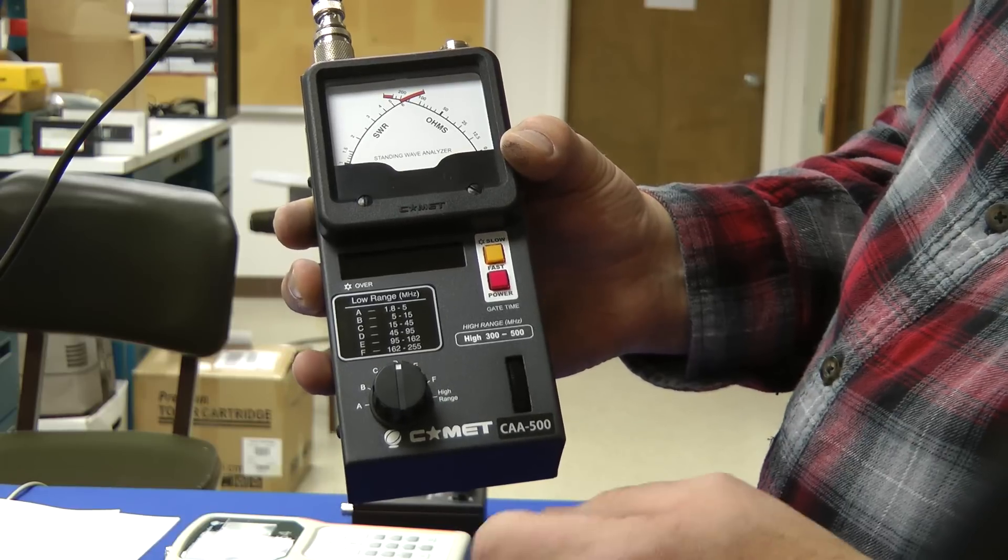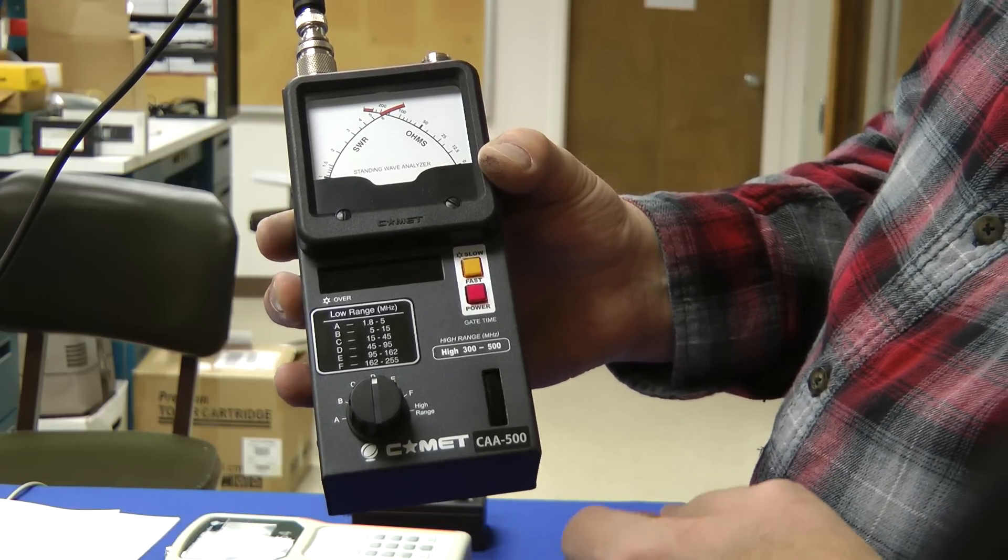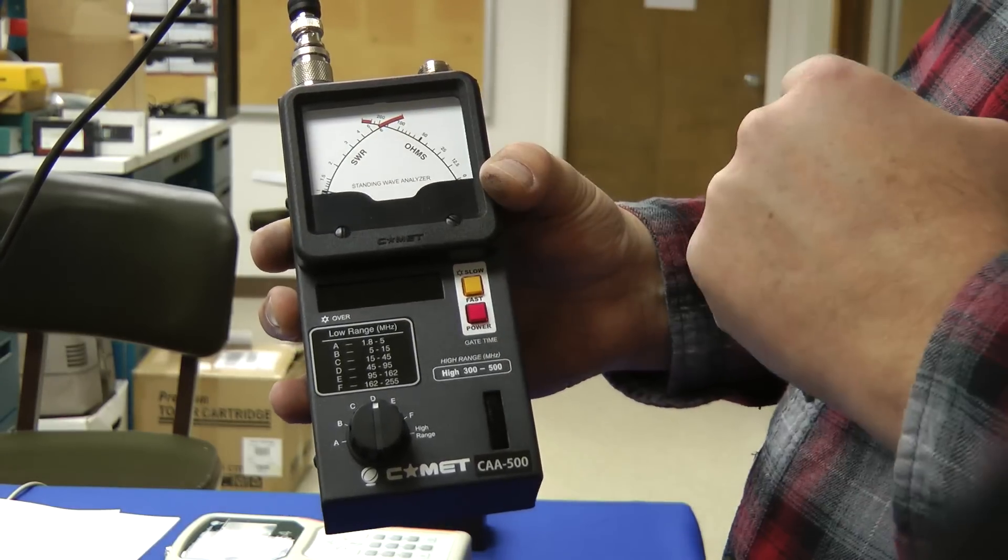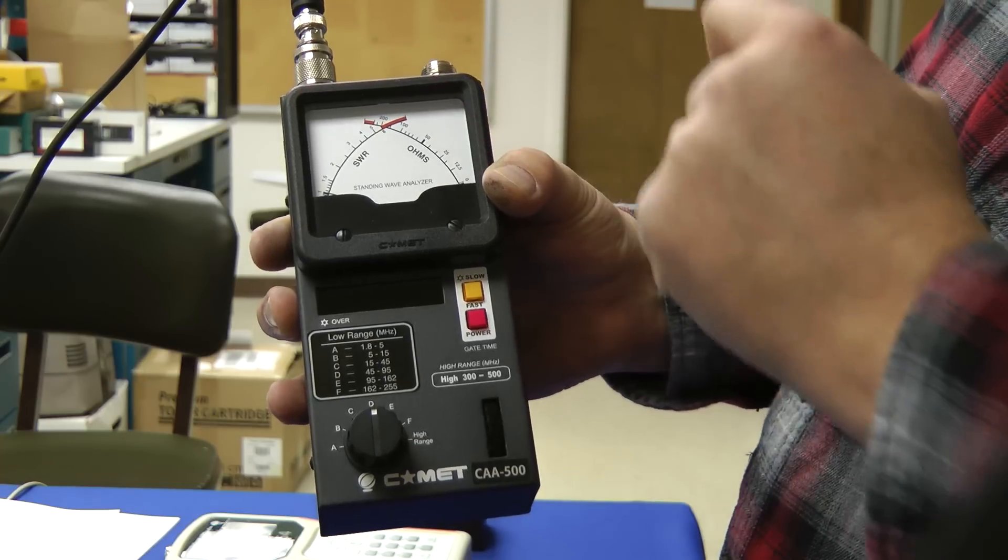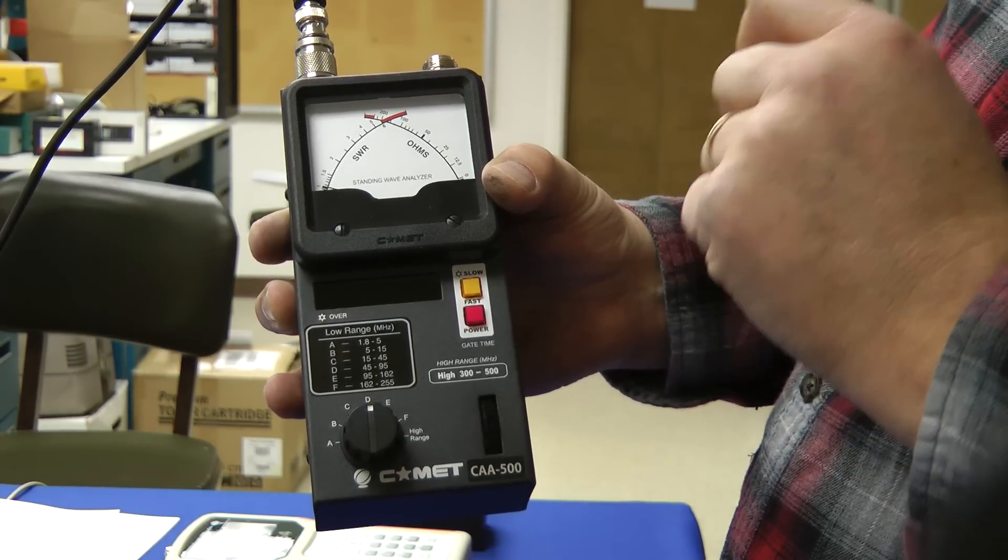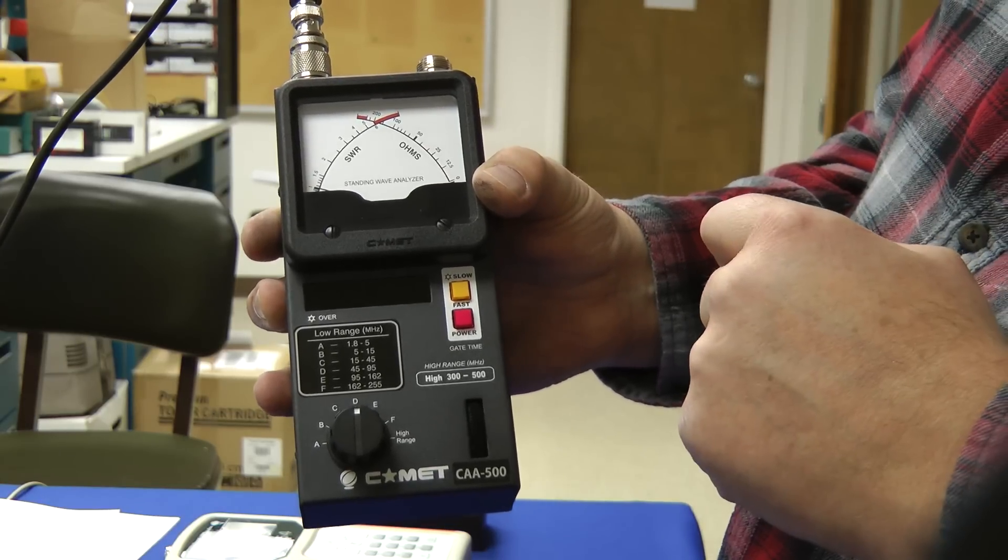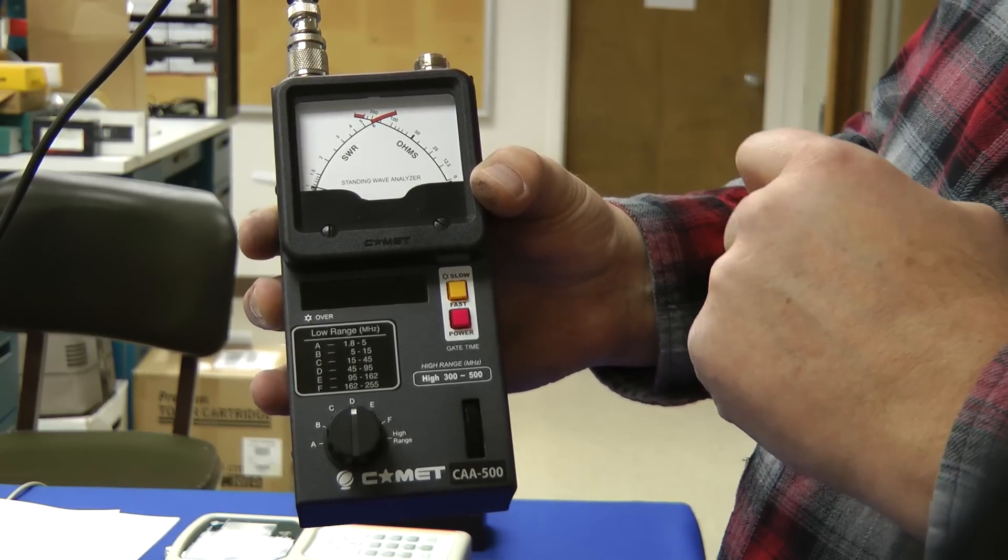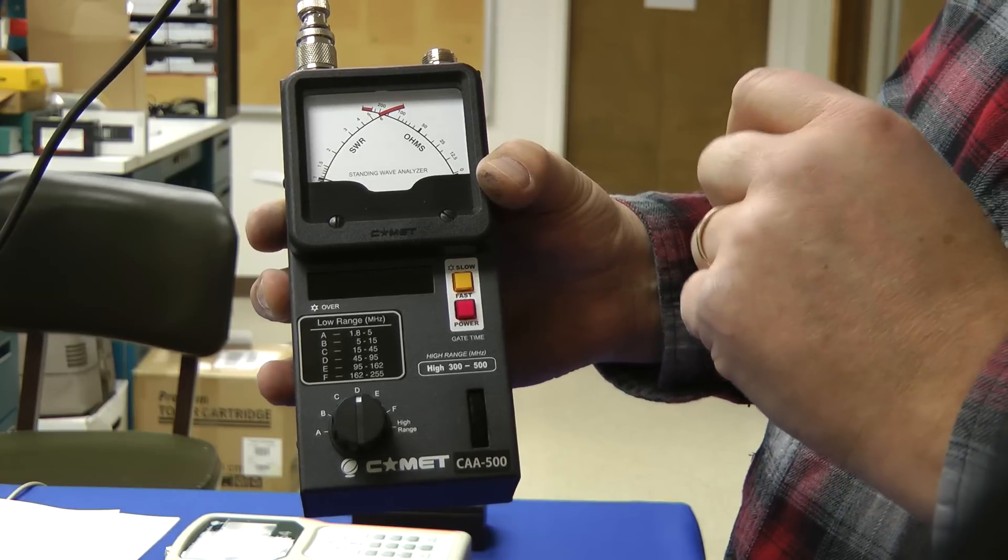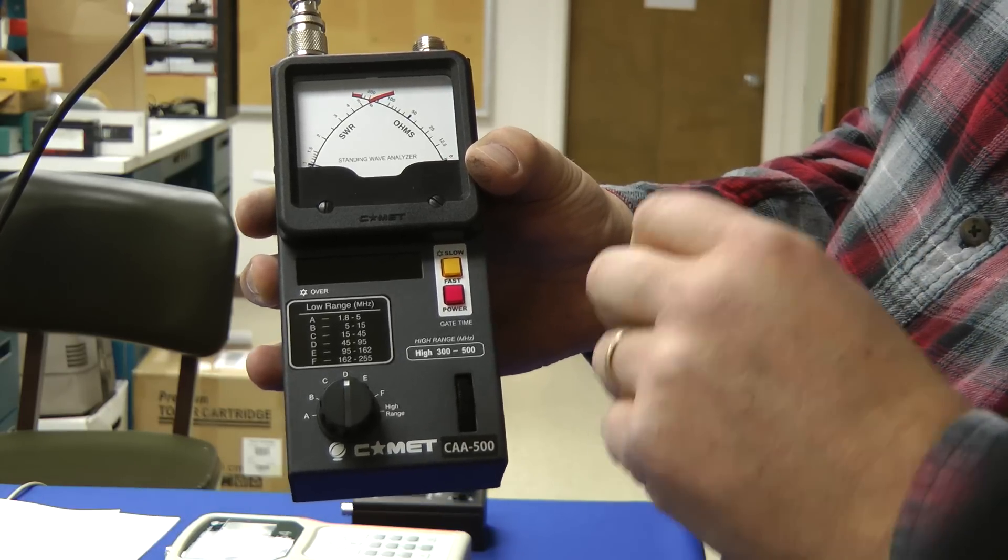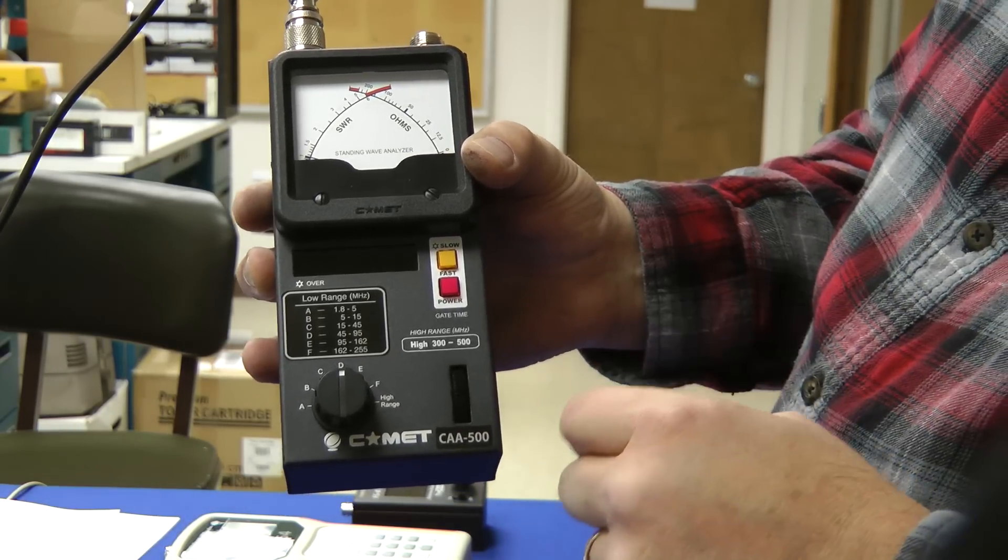Here's the ruggedly built Comet CAA500. It does SWR and it does impedance here. So if your antenna has a 1 to 1 SWR should be around 50 ohms. Doesn't do complex impedances like some other antenna analyzers do, but for the most part what you want is the minimum SWR.